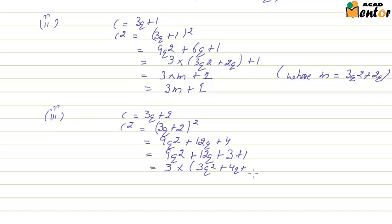So which becomes 3 multiplied by 3q square plus 4q plus 1, plus an independent term 1. So it becomes 3m plus 1, where m is 3q square plus 4q plus 1.